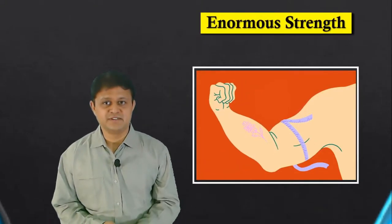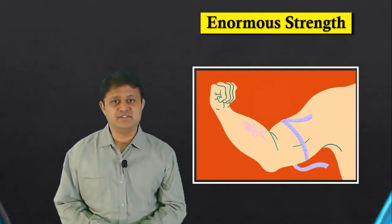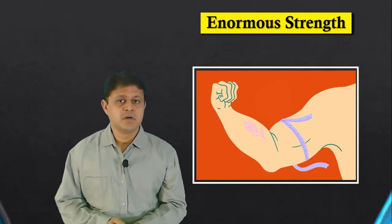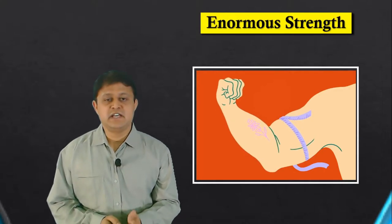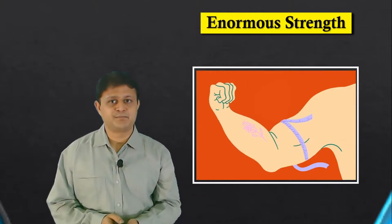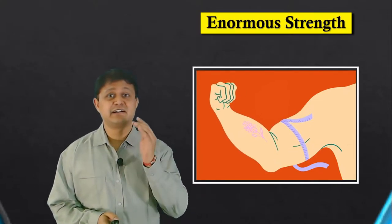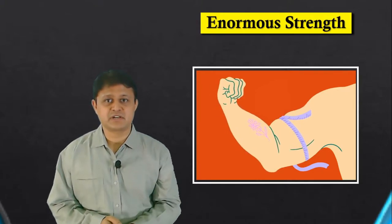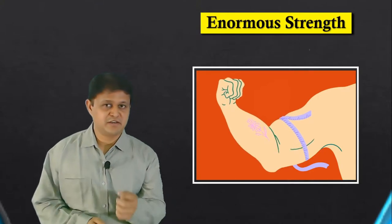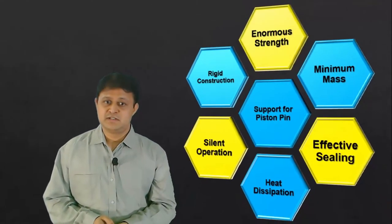First is enormous strength. In any internal combustion engine, the main power is derived from the power stroke. Due to the combustion process, extreme temperature and pressure is generated right above the piston. So to withstand against this extreme temperature and pressure, piston must have enormous strength. That is the first consideration the designer should take in mind.